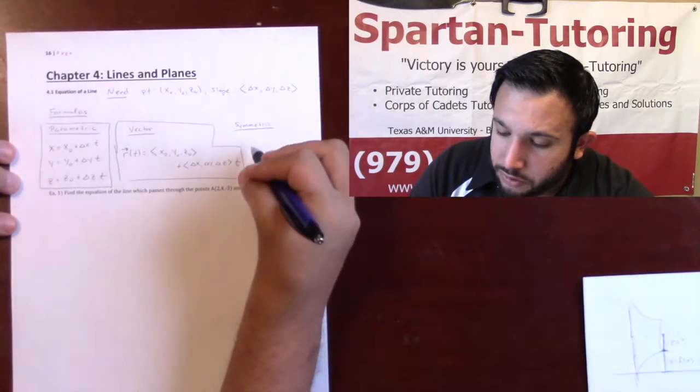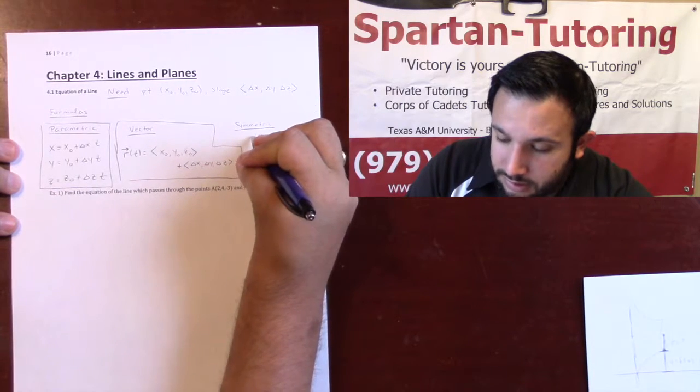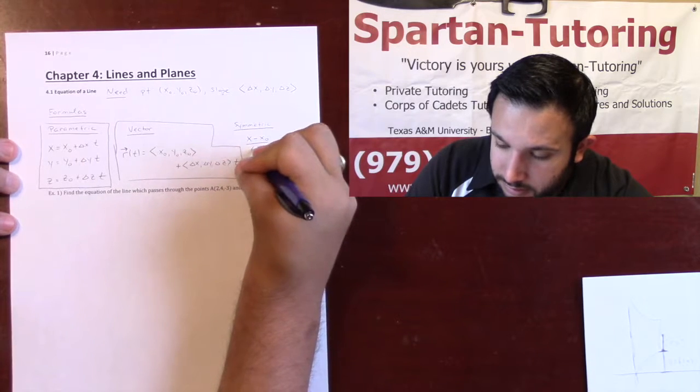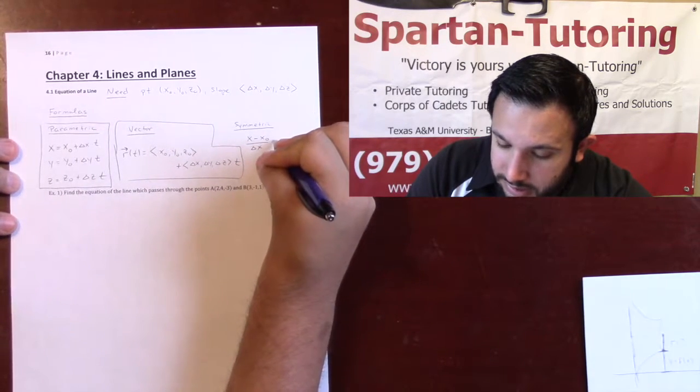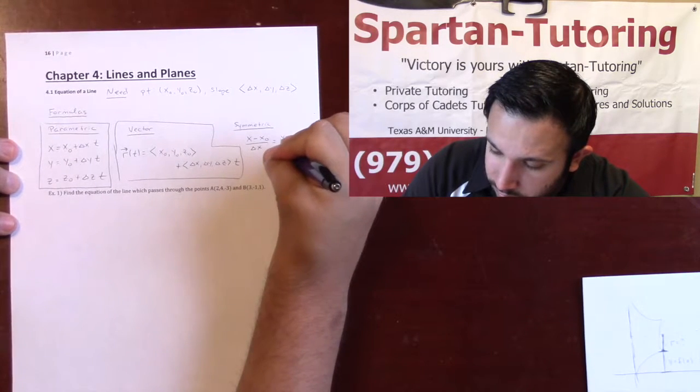For symmetric, the way that this is going to be is: x minus x-naught over delta x equals y minus y-naught over delta y